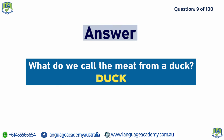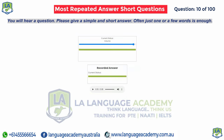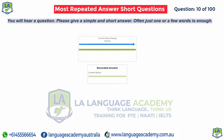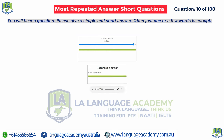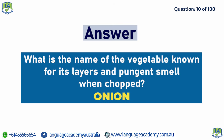What is the name of the vegetable known for its layers and pungent smell when chopped? Onion.